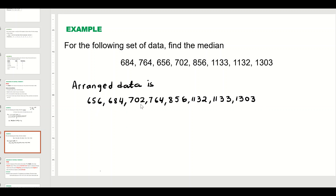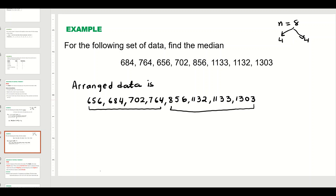The data is now in ascending order. Counting: one, two, three, four, five, six, seven, eight — so n is equal to 8. If you divide 8 into two parts, you get four and four. You'll have four observations on one side and four on the other, with no single value in the middle.